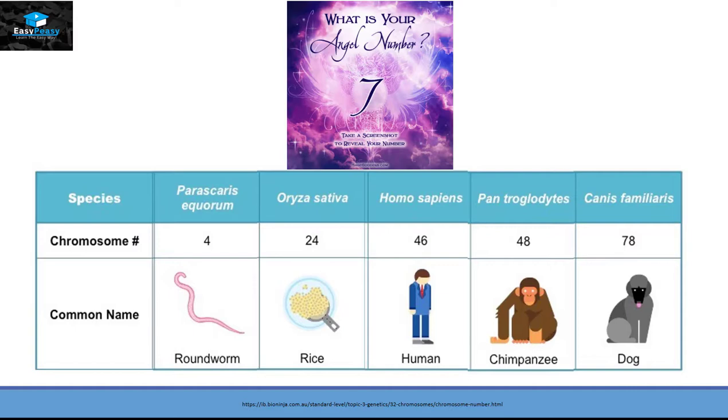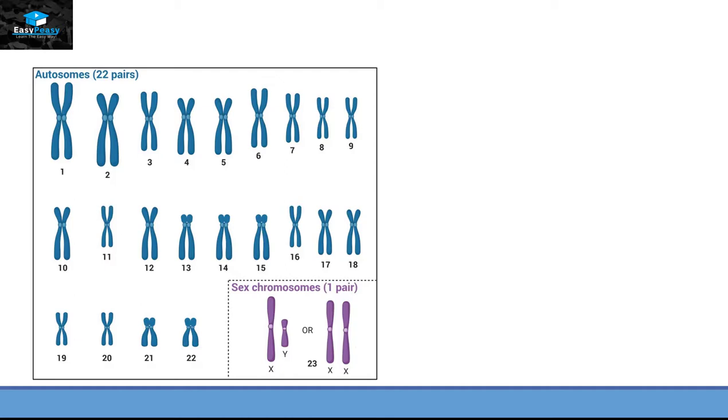Now all these chromosomes are present in the form of pairs. So in humans, as we have 46 chromosomes, we will have 23 pairs of chromosomes.